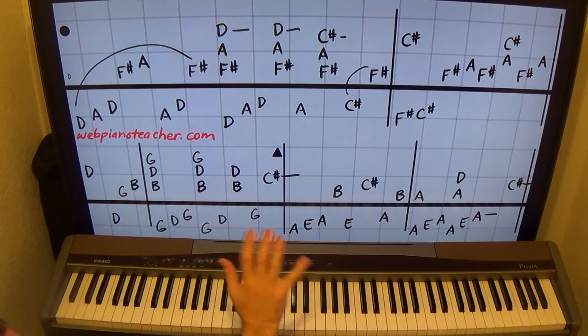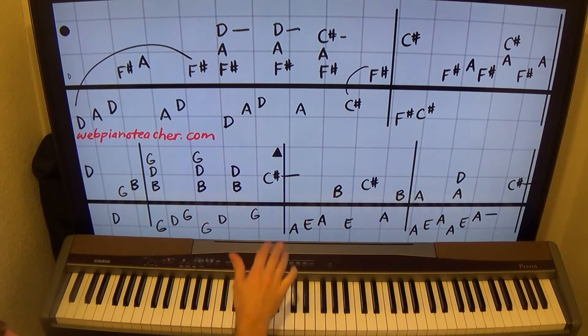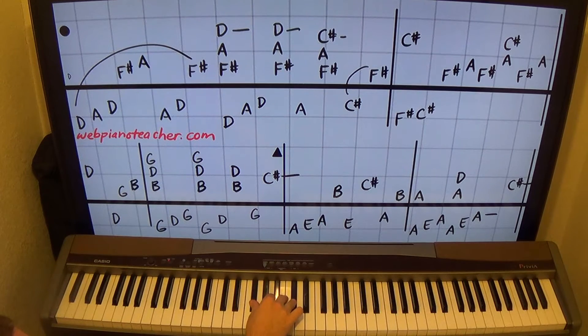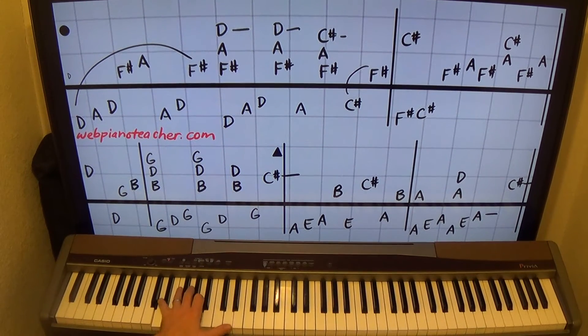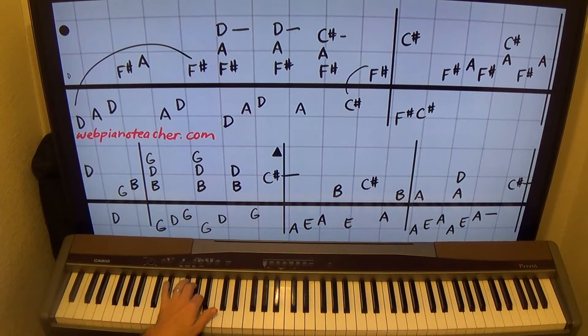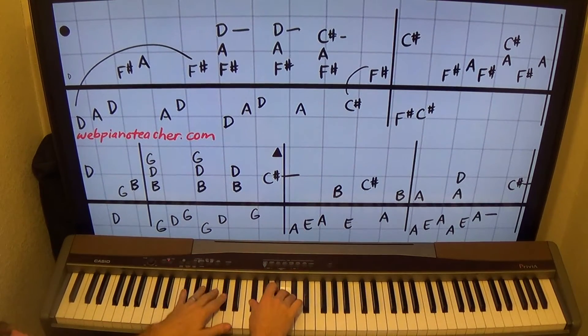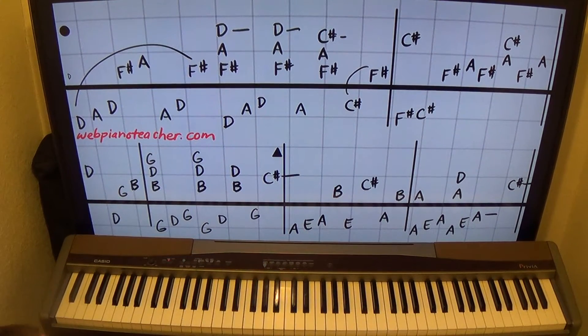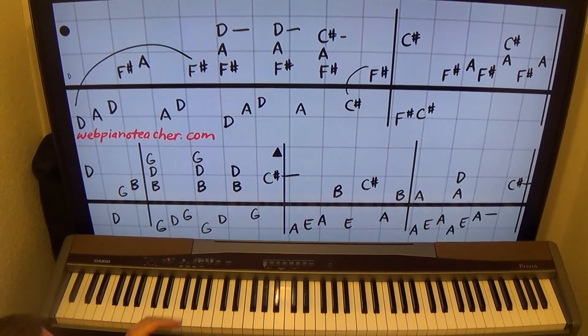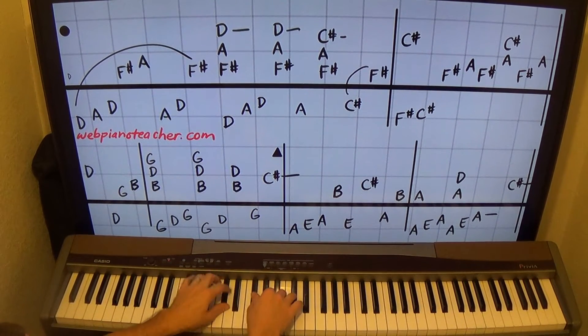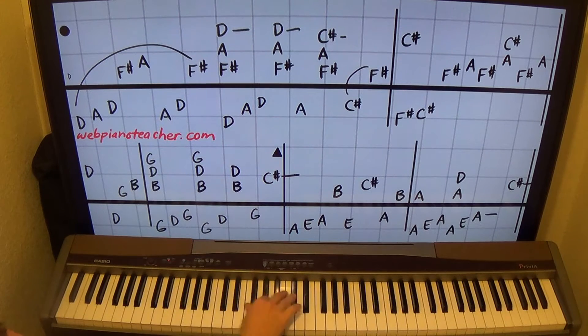Then that next chord is an F sharp minor: F sharp, A, C sharp. I'll use 1, 2, 4 for that one. Then an F sharp on the thumb. Left hand goes D, A, D, A, and then it'll play just one C sharp here. But it's really just a melodic eighth note that's attached to the next right hand note.